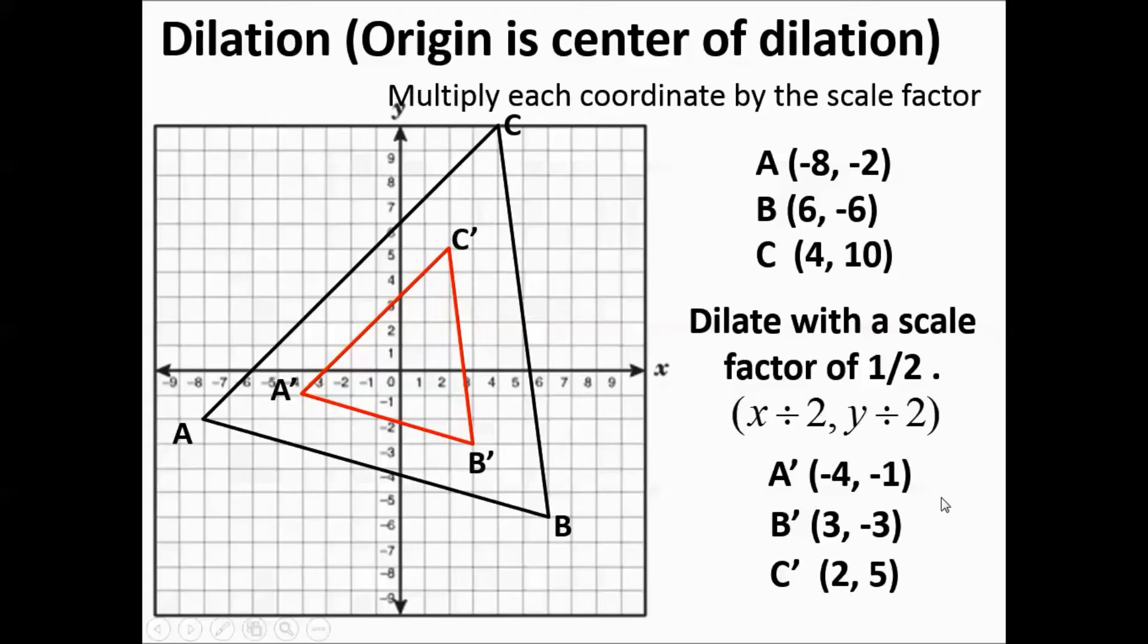And if you notice, A's angles do line up. They're the same. C's angles and B's angles. B and B's image. So they all line up. This is a pretty easy concept. Just multiplying or dividing each of the x and y's.